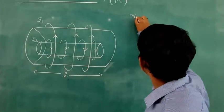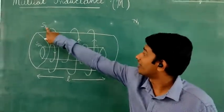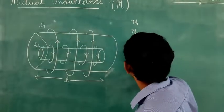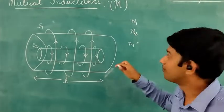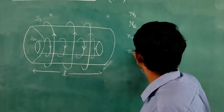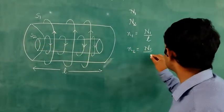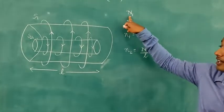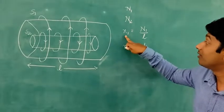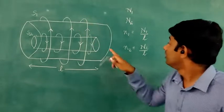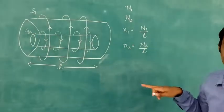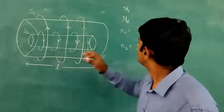Let N1 be the total number of turns in solenoid S1 and N2 be the total number of turns in solenoid S2. Let small letter n1 be the number of turns per unit length, that is N1 by L, in solenoid S1, and small letter n2 be the number of turns per unit length N2 by L in solenoid S2.